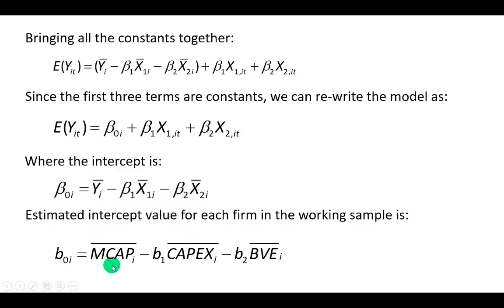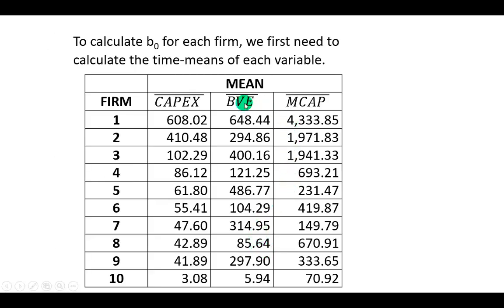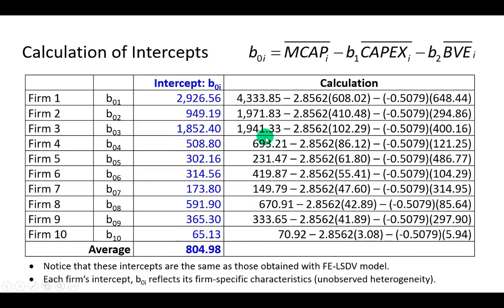Which for our empirical example would be the mean values of the dependent variable minus the product of each coefficient and the respective regressor. So with that, these are the mean values for each of the variables. And then, as I showed in an earlier video, and following the same procedure.